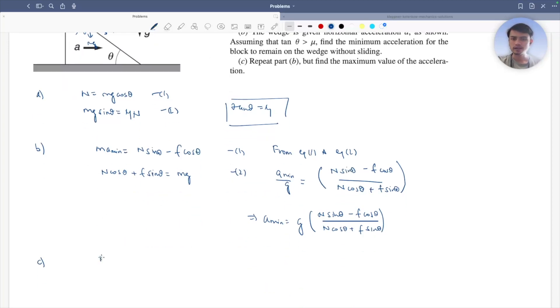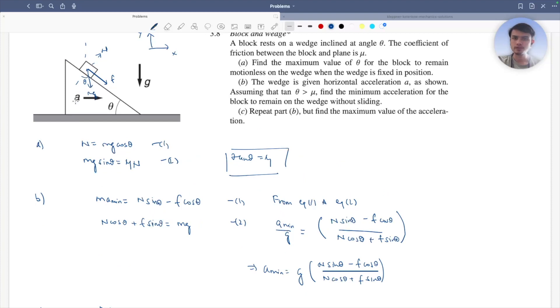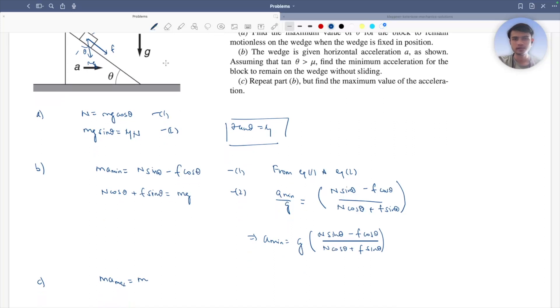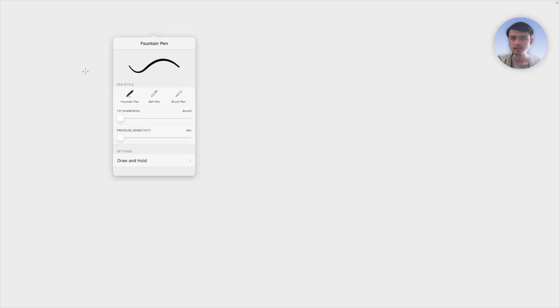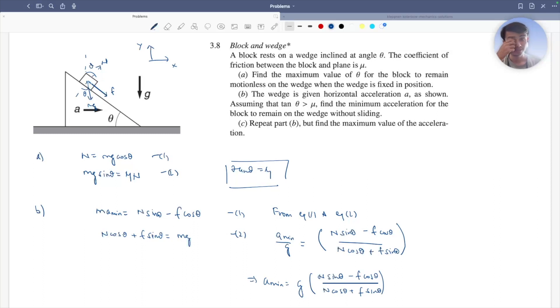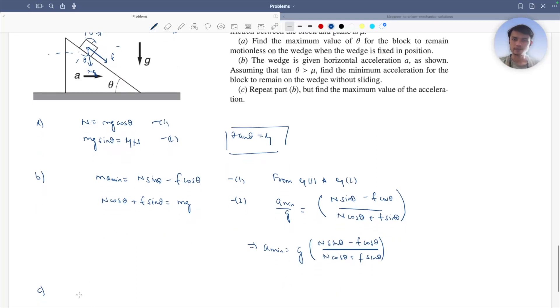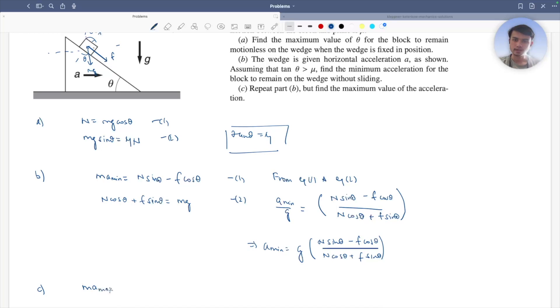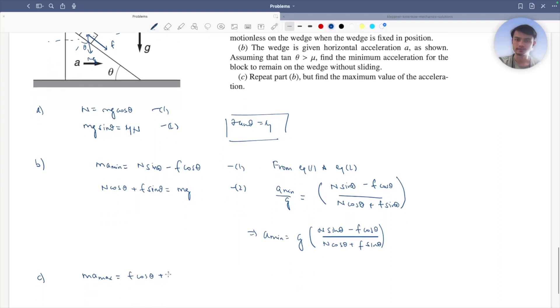Now, we have m a max that equals to, a max will be in acceleration in the x direction. This is theta again. So take the components along the x axis. That becomes m a max equals to f cos theta plus n sin theta.